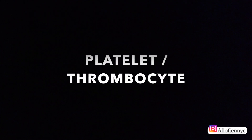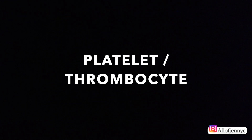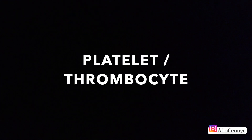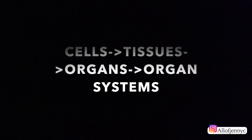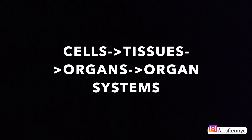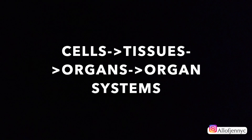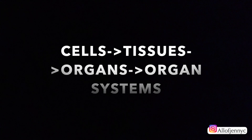A platelet is also known as a thrombocyte. What thrombocytes do is help form blood clots to stop or prevent bleeding. A group of cells grouped together is known as a tissue. Remember the hierarchy: cells, then tissues, then organs, then organ systems. Don't get confused — they might try to mix up the order. Just know it's cells, tissues, organs, then organ systems.